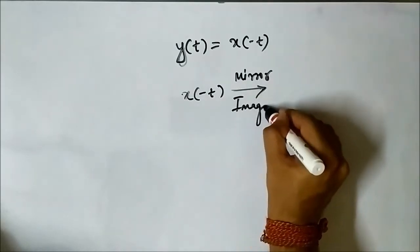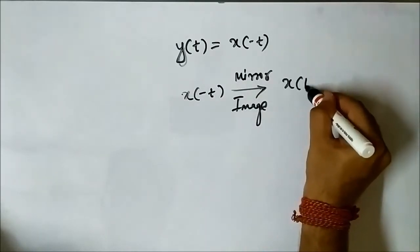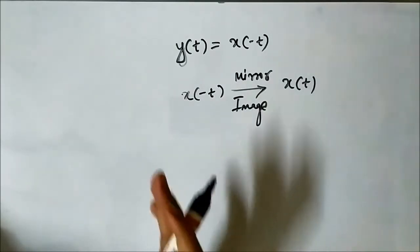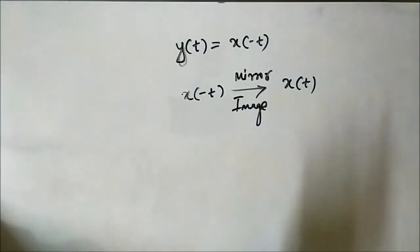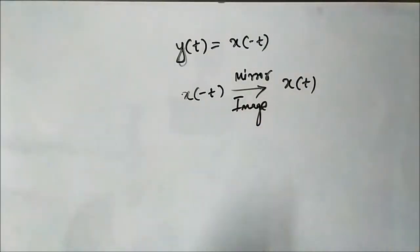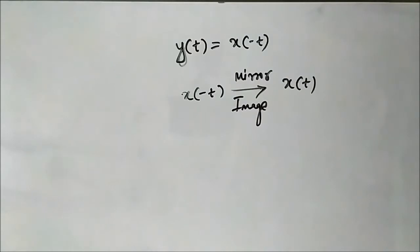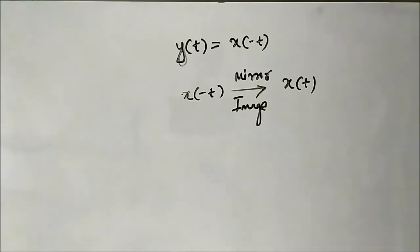The time-reversed signal x(-t) is the mirror image of the original signal x(t) about the y-axis — the vertical axis. Here we will perform some time reversal operations on some signals and see how this is done, and we will discuss some questions.